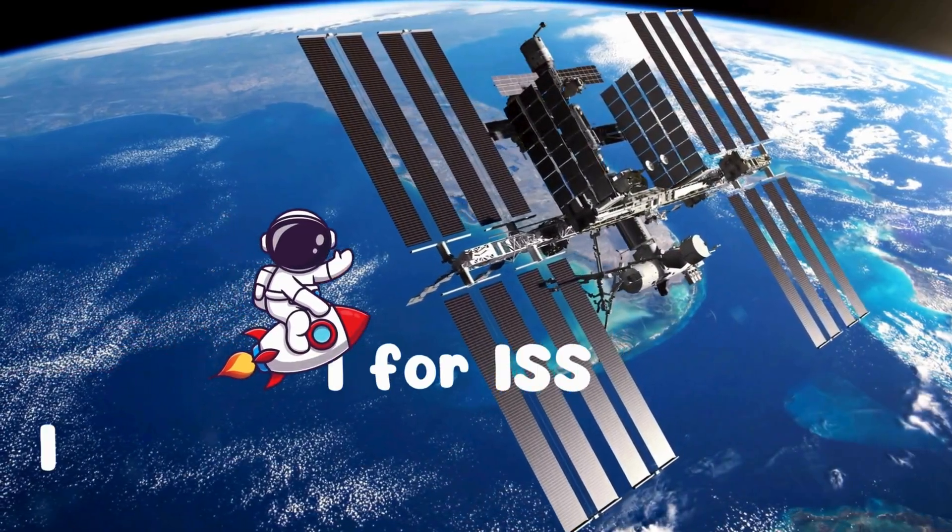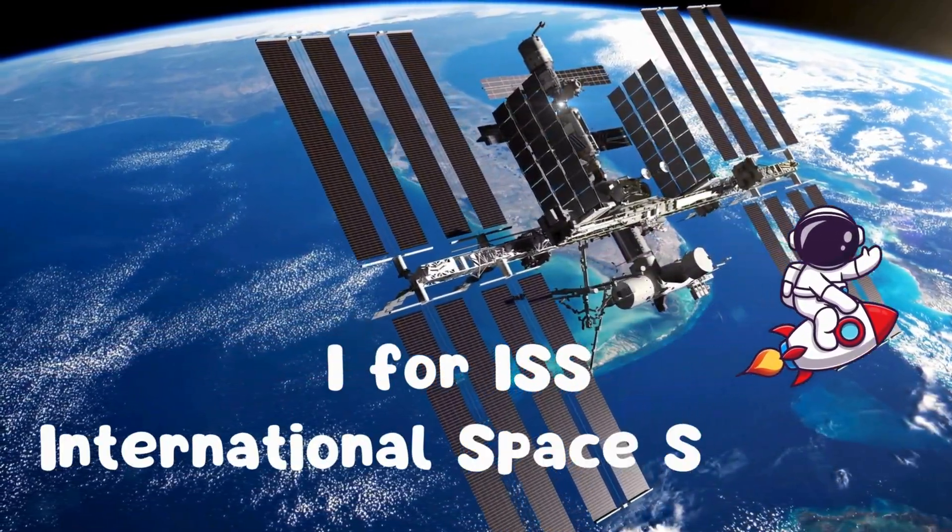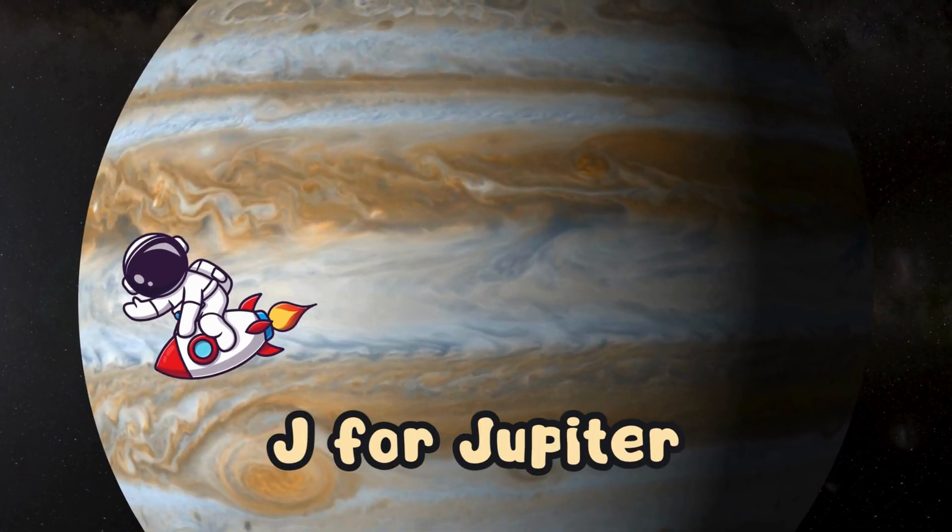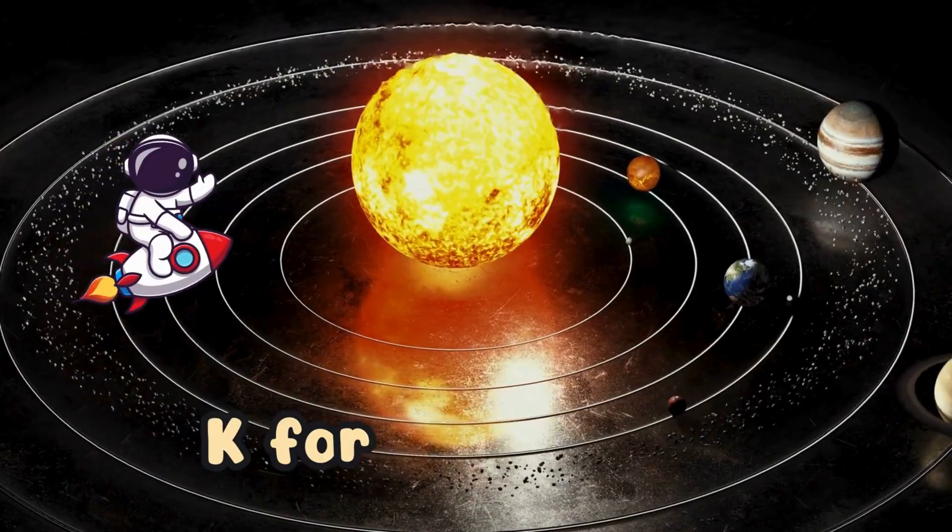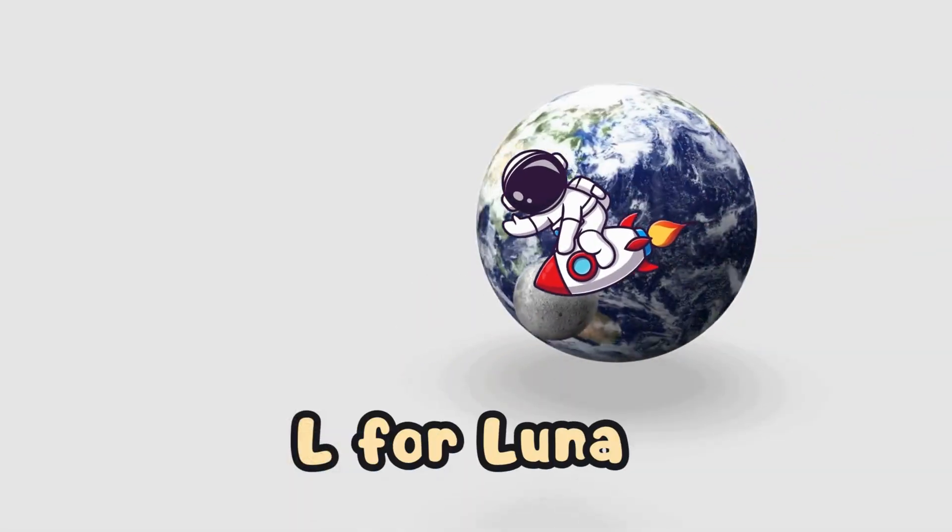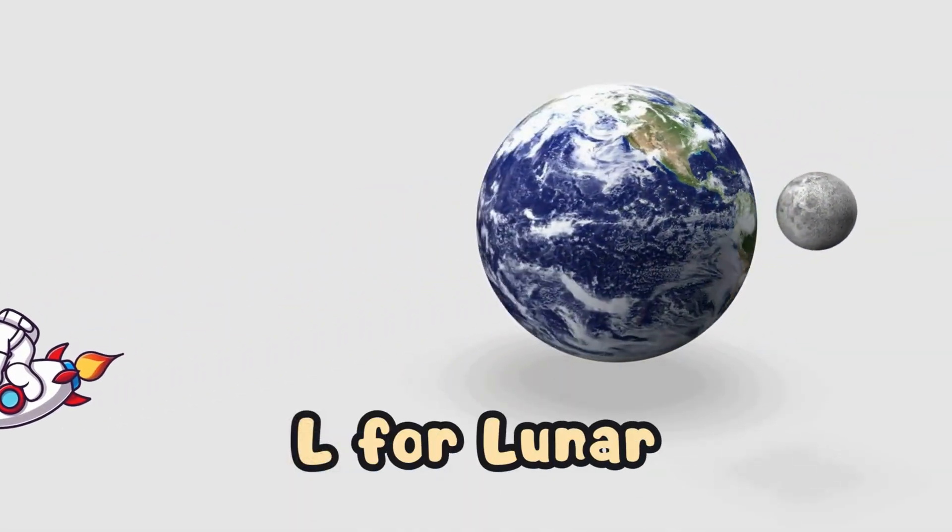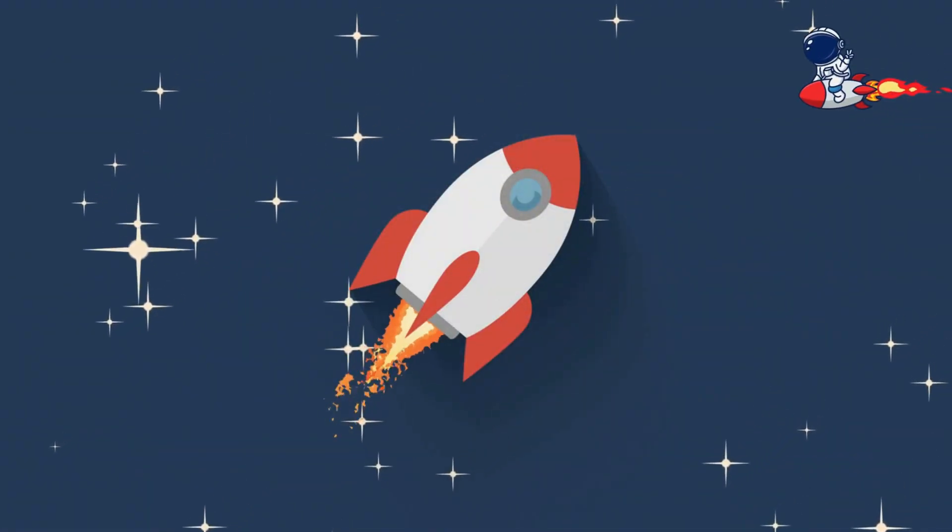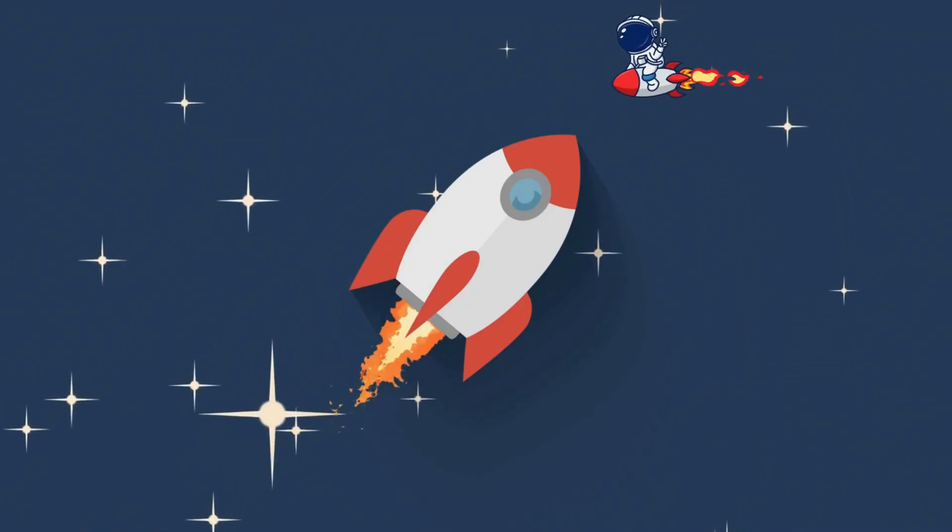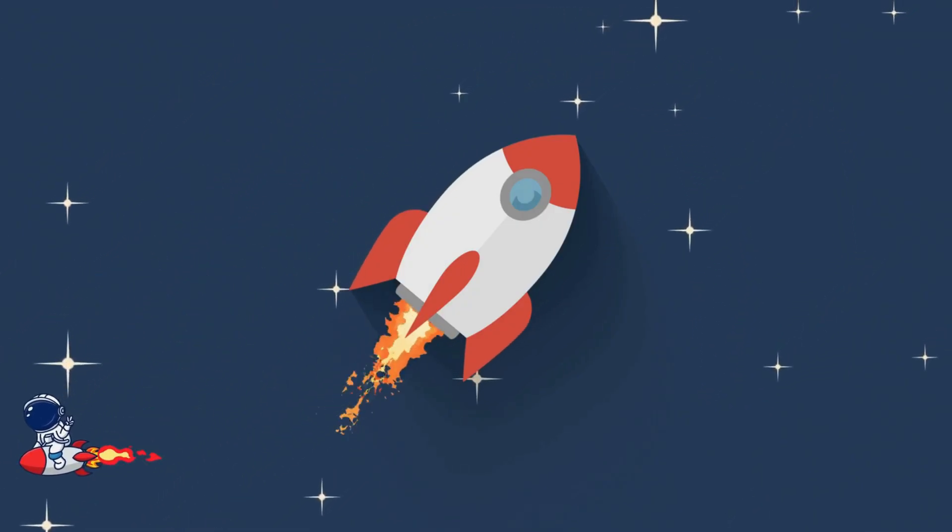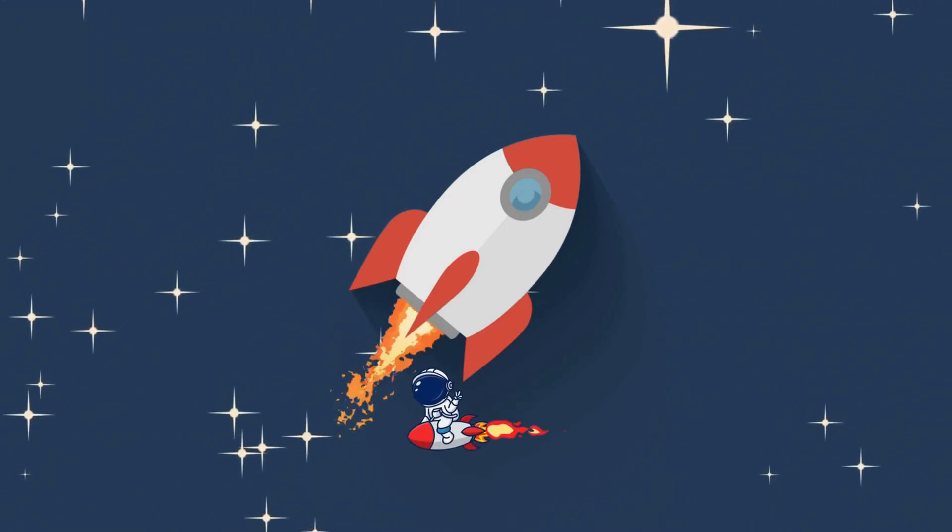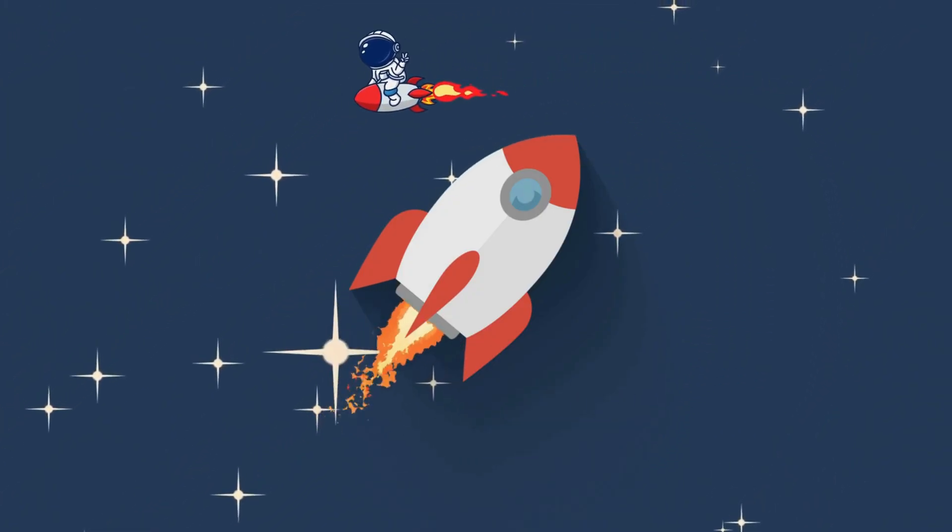I for ISS, flying so high. J for Jupiter, big in the sky. K for Kuiper, icy and cold. L for lunar, with stories told. Come on kids, let's sing and play, learning the stars in a fun new way. From A to Z we're gonna see the wonders of space, so wild and free.